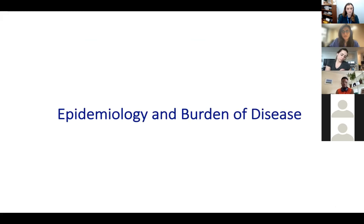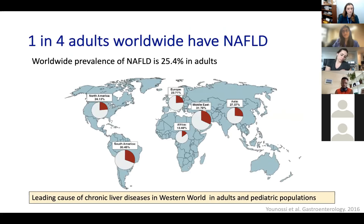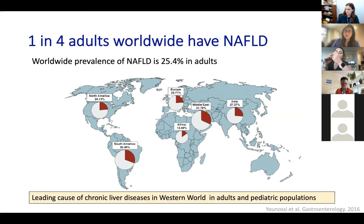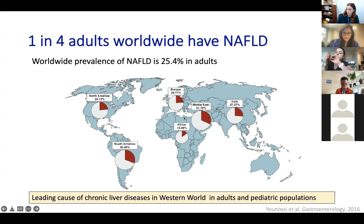On epidemiology: about one in four adults worldwide have NAFLD, with a worldwide prevalence estimated at 25–30%. In the United States, NAFLD prevalence is about 30%, representing approximately 110 million people—likely an underestimate given screening biases. Globally, the highest prevalence is in the Middle East and South America, with North America close behind at 24%, Europe lower, and Africa the lowest. NAFLD has become one of the leading causes of chronic liver disease in both adult and pediatric populations in the Western world.